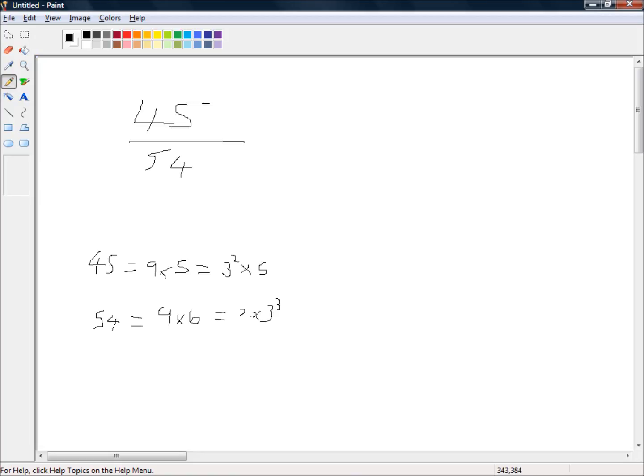So what we can cancel here is the 3's. We can cancel 2 3's off here and that just leaves 1 3 here. So this is equal to 5 over 2 times 3 is 6. So 45 over 54 reduces down to 5 sixths.